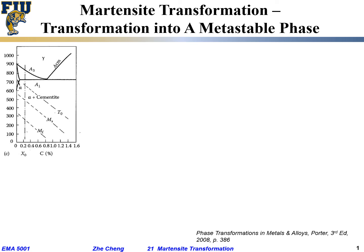What we are showing here are a few plots. Let's look at the phase diagram illustrated here — this is the iron-carbon phase diagram. The top region is gamma, the so-called FCC austenite structure of iron, which has a decent solubility of carbon. Depending on temperature, at around 700 and something degrees, we can dissolve as much as around 0.76 weight percent of carbon.